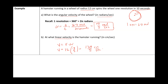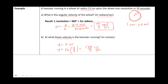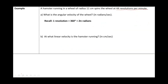The main takeaway: when you blank out on an exam, always write down the formula first. Now, another example where the units change. A hamster running in a wheel of 11 centimeters spins the wheel at 44 revolutions per minute. This time, the hamster completes 44 revolutions in one minute. What is the angular velocity of the wheel?